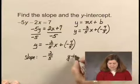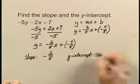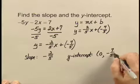The y-intercept, which corresponds to the b, is the point (0, -7/5).